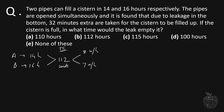The pipes are opened simultaneously and it is found that due to leakage in the bottom, 32 minutes extra are taken for the cistern to be filled up. A and B were supposed to take X hours to fill the entire tank of capacity 112. But there is a leakage — let's call this leakage C.